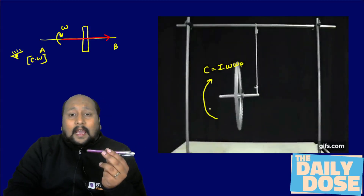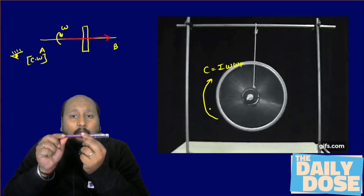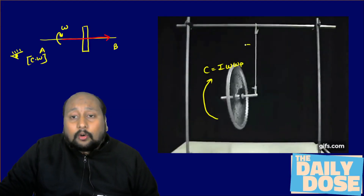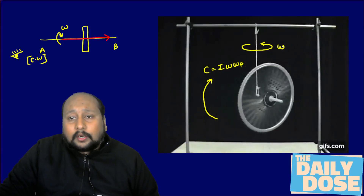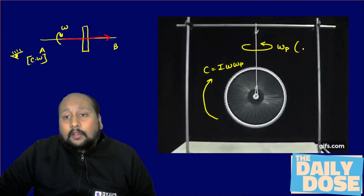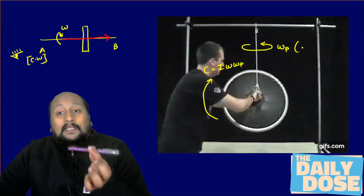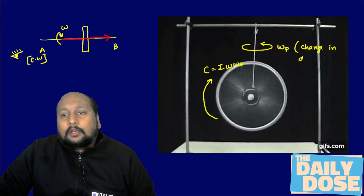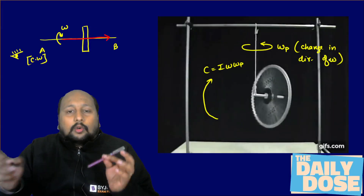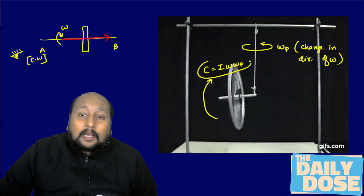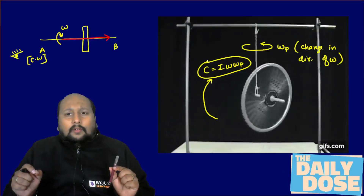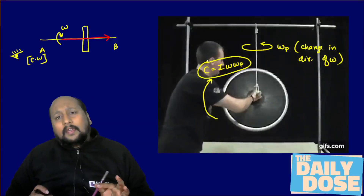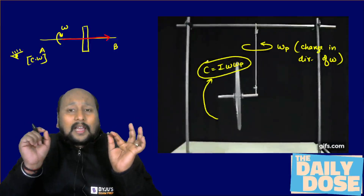What is happening over here is, as the omega axis is also changing — that means the direction is also changing — due to the change in direction of omega, there is a very interesting parameter coming into the picture that we call the angular velocity of precession, which basically comes into the picture due to the change in direction of omega. And due to this omega P only, we are having this gyroscopic couple. In this video, we will be trying to understand what will be the direction of gyroscopic couple and how to identify the gyroscopic effect in one of the applications.